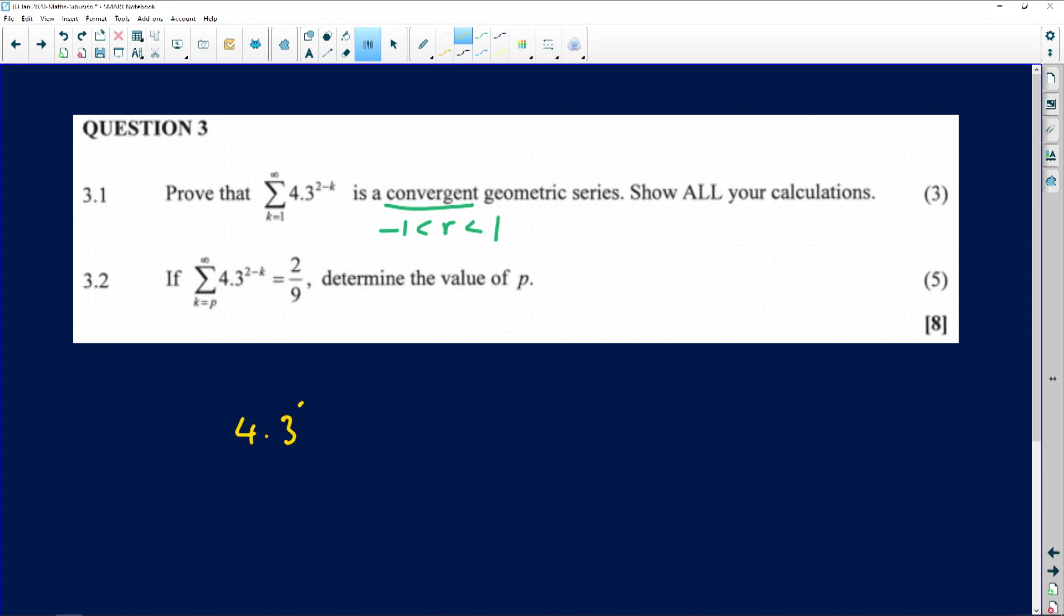It's 4 times 3 to the power 2 minus our first k value, which is 1. Plus 4 times 3 to the power 2 minus our second k value, which will be 2, and then 4 times 3 to the power 2 minus our third k value, which is going to be 3, and this goes on and on until infinity. So this is going to be 4 times 3 to the power 2 minus 1, which is going to give us 12.